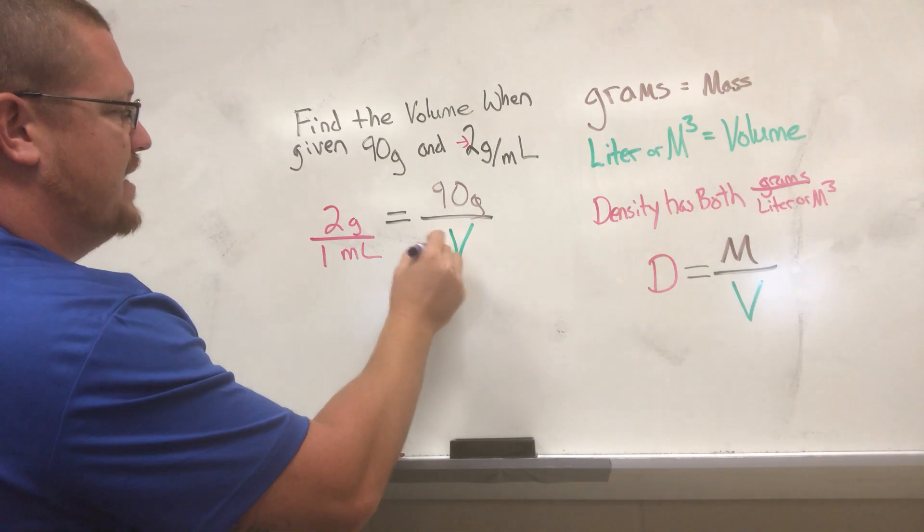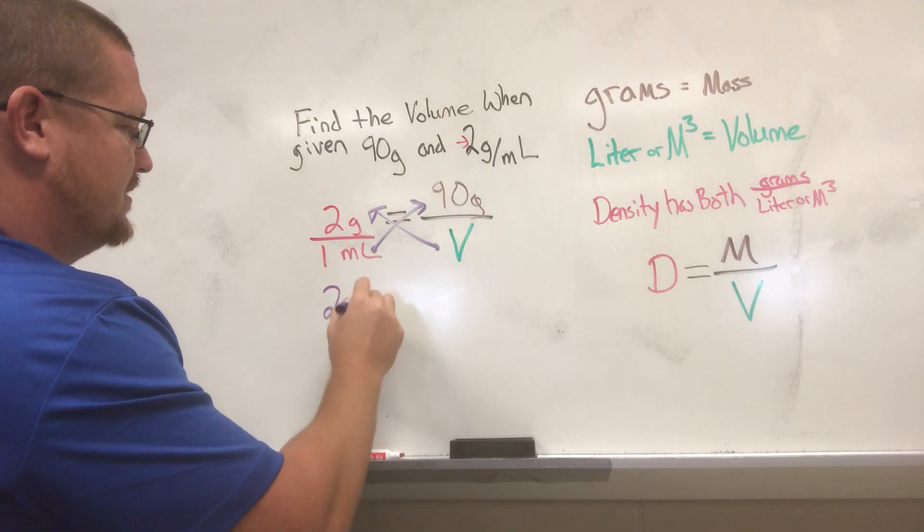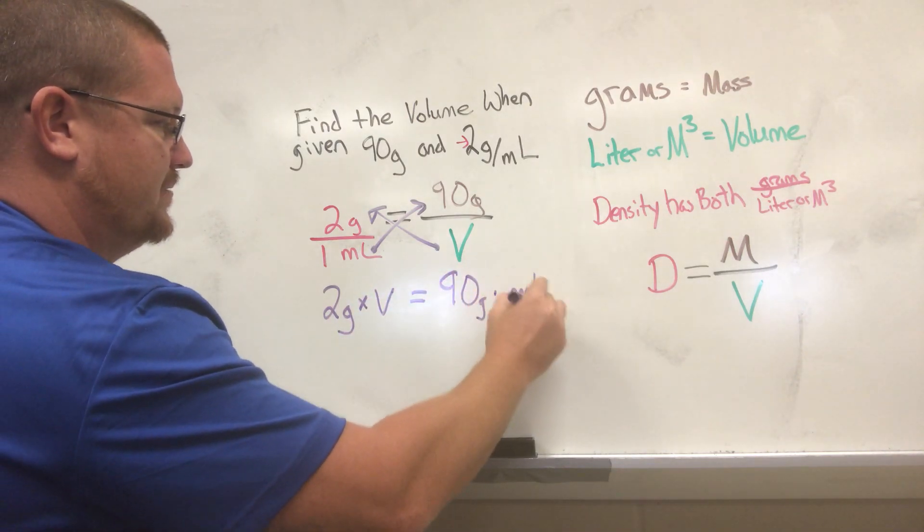So we're gonna cross multiply. We're gonna get 2 grams times V equals 90 grams times milliliter.